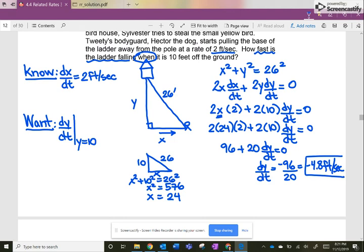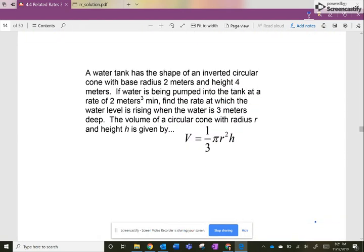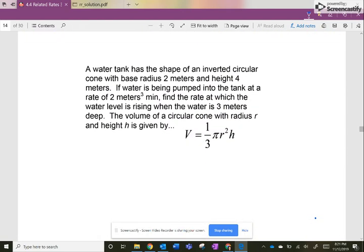So there's our first typical example, the Pythagorean theorem. Now let's do a second one. And our second one is usually either volume or surface area or area. And so now we've got a water tank that has a shape of an inverted circular cone. Oh, yeah, we do.